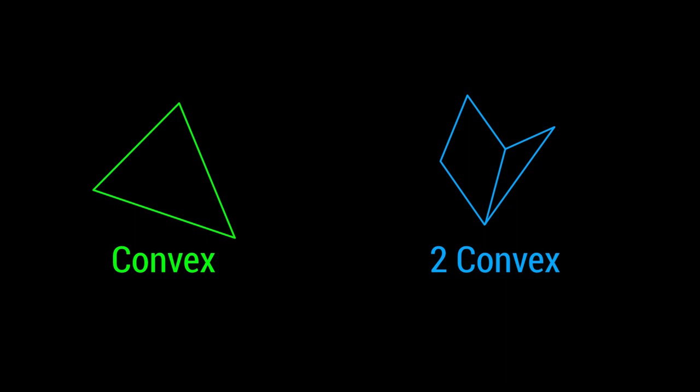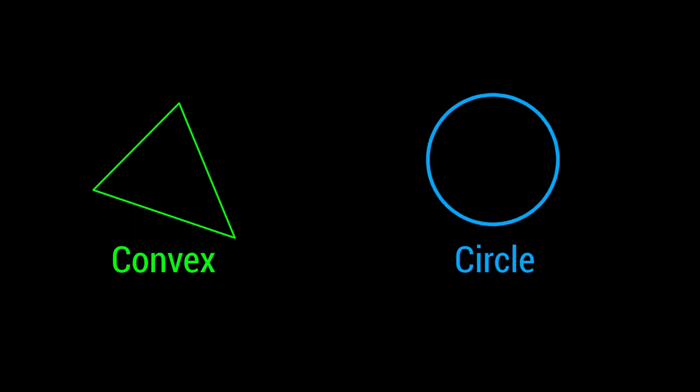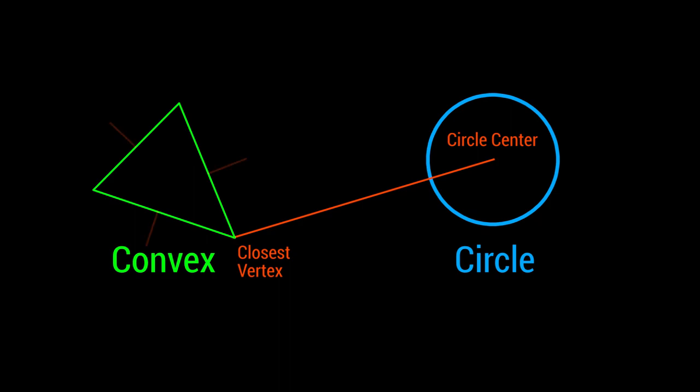Now let's say you have a convex shape and a circle — how do you check if they're colliding? It's easier than you think. Since a circle has infinite normals, you can't check it like you would with two convex shapes. Instead, you use this axis, which goes from the circle center to the closest point on the polygon. Then you can perform the checks with SAT as you would normally.